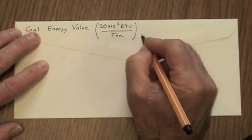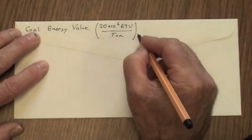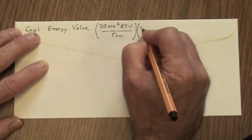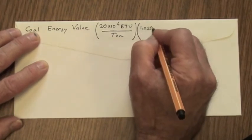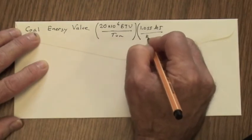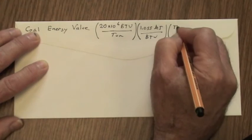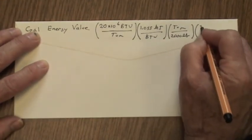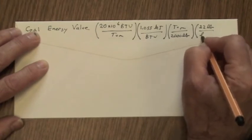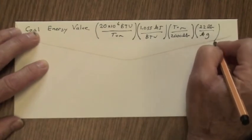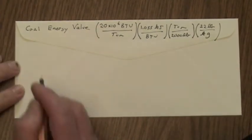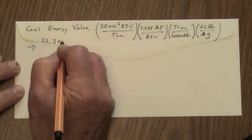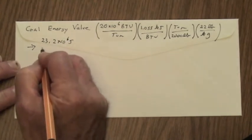Now, of course, British thermal units and tons are not standard MKS units, so let's convert that to joules per kilogram. There are 1.055 kilojoules per BTU, 2,000 pounds per ton, and there are 2.2 pounds per kilogram. And punching those numbers into a calculator gives us 23.2 times 10 to the sixth joules per kilogram.